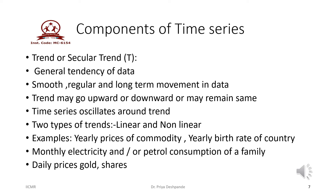There are two types of trends: linear trend and non-linear trend. The best examples of time series showing trend are yearly prices of a commodity, yearly birth rate of a country, monthly budget or monthly electricity or petrol consumption of a family, and daily prices of gold and shares.